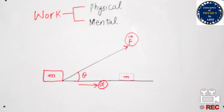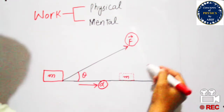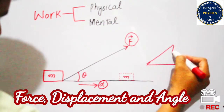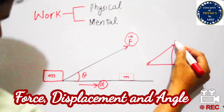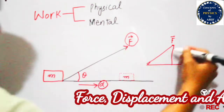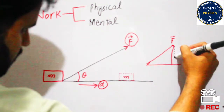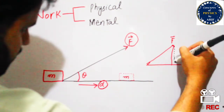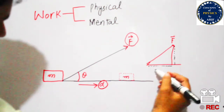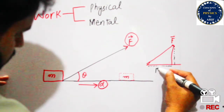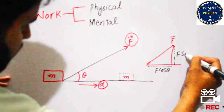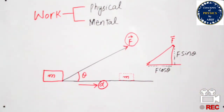Let us resolve the force into components. One component is known as the vertical component and the other component is known as the horizontal component. These are also known as F sin theta and F cos theta respectively.